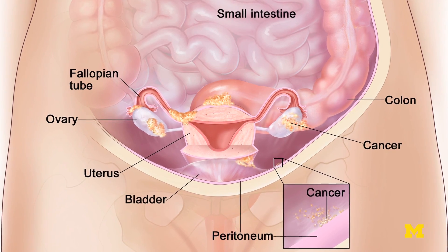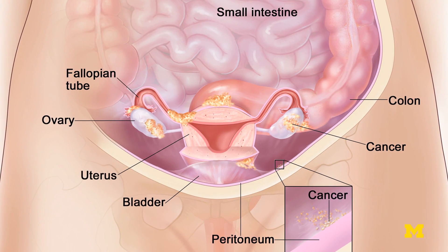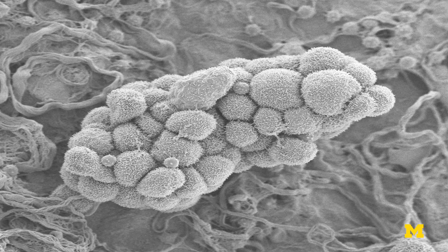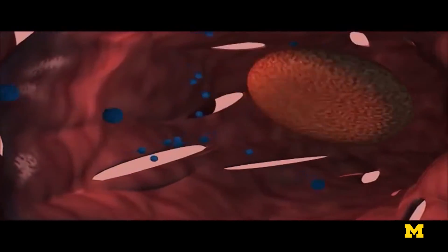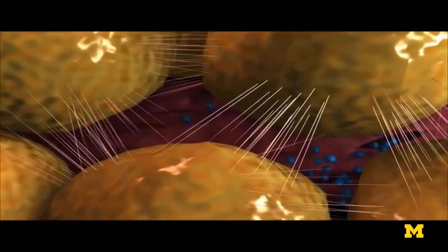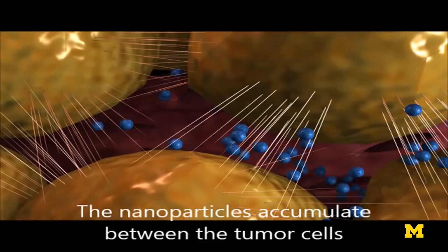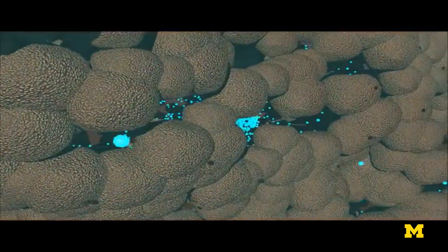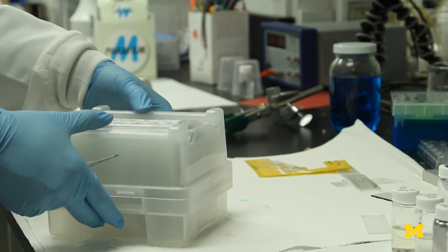We've been looking at drugs that can specifically go and target ovarian cancer cells and kill the harmful cancer cells without affecting any of the remaining cells within the body. By knowing which types of shapes can actually pass through a particular cell membrane, we can develop the exact same shape and incorporate drug molecules within that particle so that once it's ingested by the cell, the drug can be released on the inside of the cell, essentially killing that particular cell.